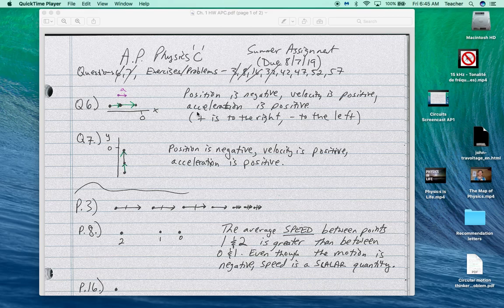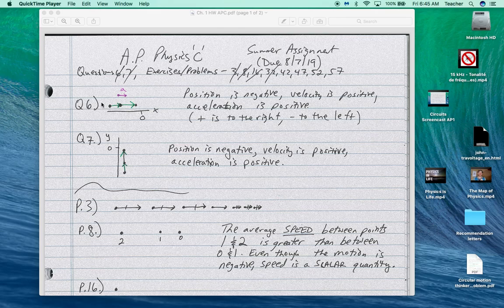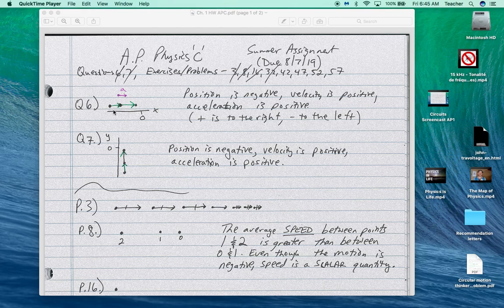So we define position as negative to the left, positive to the right, positive up, negative down. So in this particular case, both these actually have the same answer. So it was probably a poor choice of problems. Both of them have a positive velocity because here it's pointing to the right, here it's pointing up. Both of them have a positive acceleration because the arrows are increasing in size to the right and increasing in size up. Both of them have a negative position because they're to the left of the zero or below the zero.